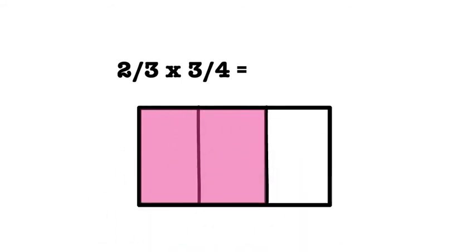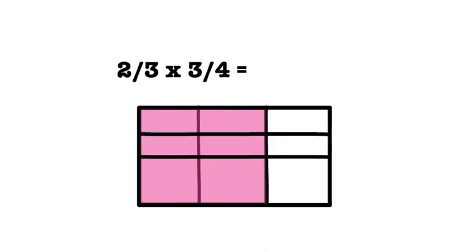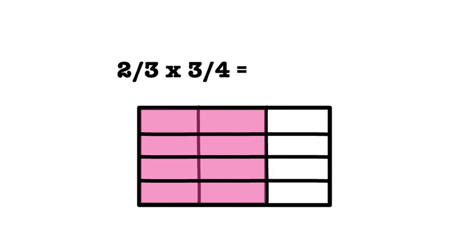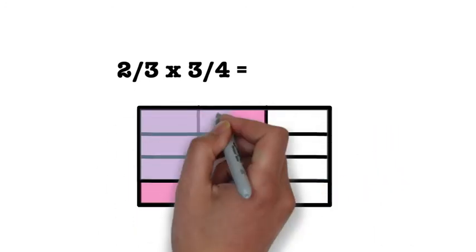The second fraction is three-fourths. Since three-fourths has a denominator of four, we will horizontally divide the rectangle into four equal pieces and then shade three of them to represent our fraction.